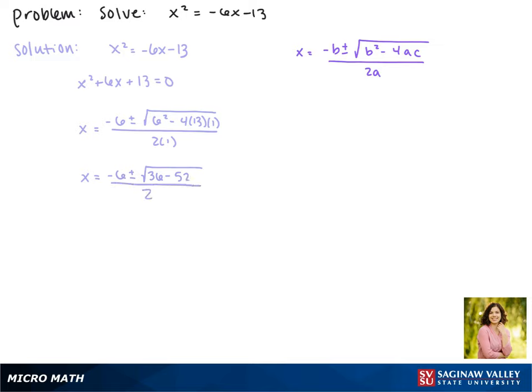Now 36 minus 52 gives us negative 16. We can't take the square root of a negative, so this equation actually has no real solutions. But we can find complex solutions by breaking up the square root of negative 16 into the square root of 16 times the square root of negative 1.